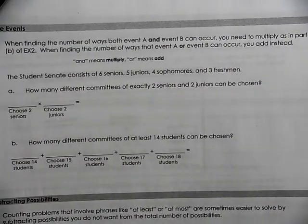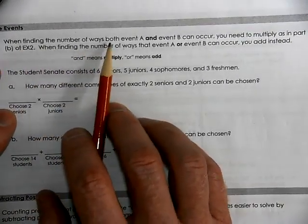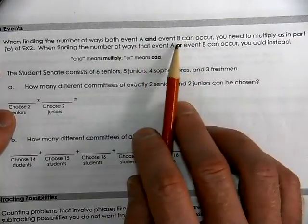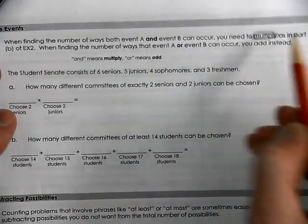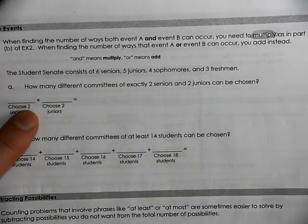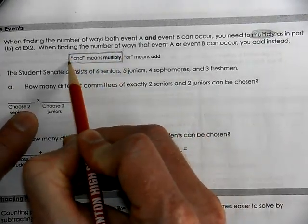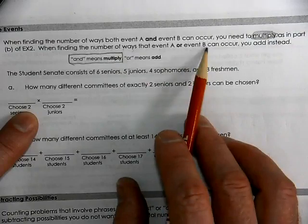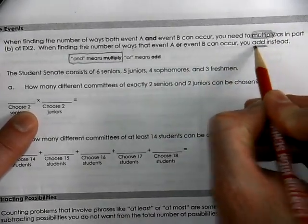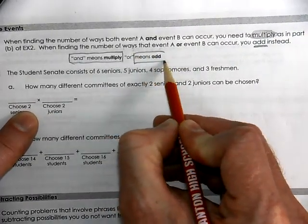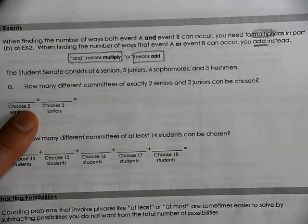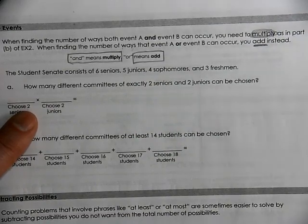Here they're talking about AND and OR events. When finding the number of ways both event A AND event B can occur, you need to multiply — AND means multiply. When finding the number of ways event A OR event B can occur, you ADD. If you want this or you want that to happen, it's an adding situation. If you want this AND that to happen, that's a multiplying situation.